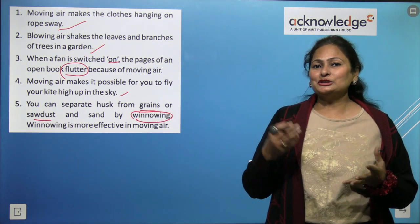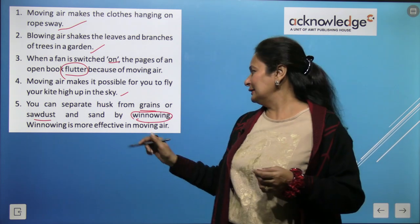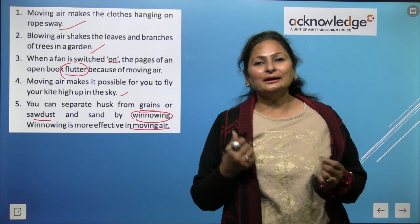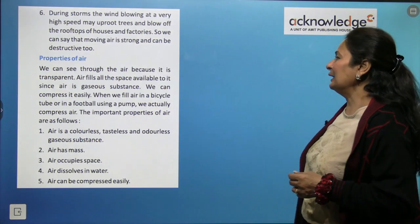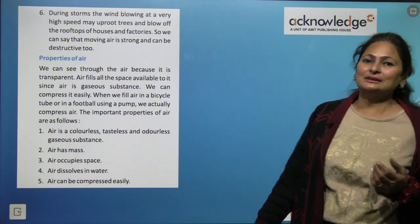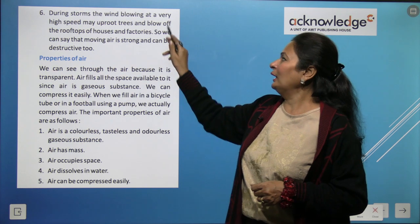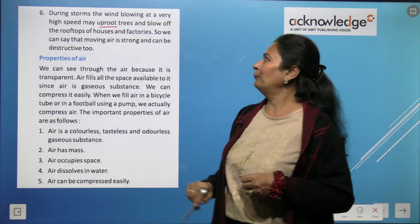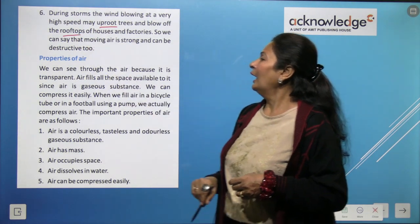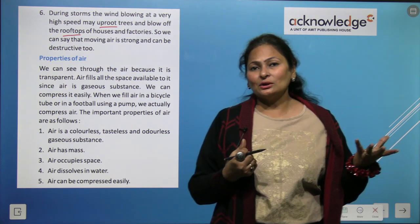You can also separate husk from grains by the process of winnowing — winnowing is effective when wind is blowing. During a storm, wind blows at very high speed and can uproot trees and blow off the rooftops of houses and factories, causing damage.